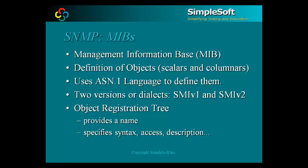Manageable objects are modeled as either scalar objects or columnar objects. Scalar objects are used to model data elements that are unique in nature, like a company's name, while columnar variables are part of a table structure to model data elements that would be multiple in nature, like a list of employees.